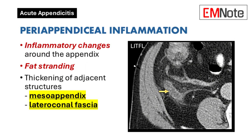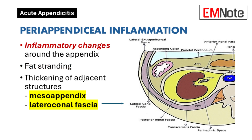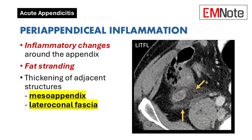Periappendiceal inflammation: CT scans often reveal inflammatory changes around the appendix, including fat stranding and thickening of adjacent structures like the mesoappendix or lateroconal fascia. This inflammation is critical for differentiating appendicitis from other conditions.